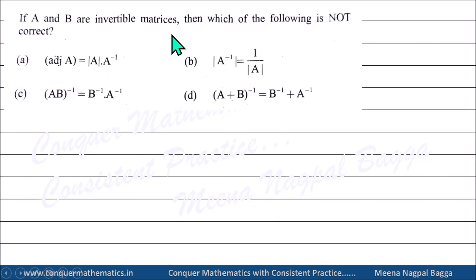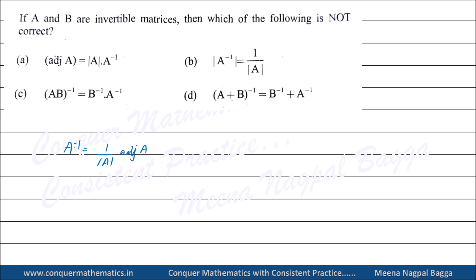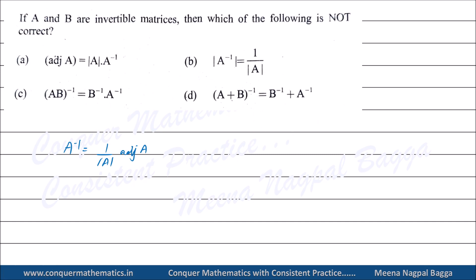Next: A and B are invertible matrices - which is NOT correct? Option checking: adj(A) = det(A)·A inverse - bilkul theek hai. det(A inverse) = 1/det(A) - correct. Inverse of AB = B inverse × A inverse (reversal law) - correct. But inverse of (A + B) = B inverse + A inverse - yeh koi result nahi hai, this is false. So this is the incorrect statement - answer is that option.